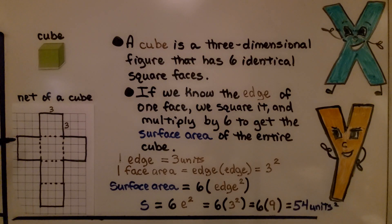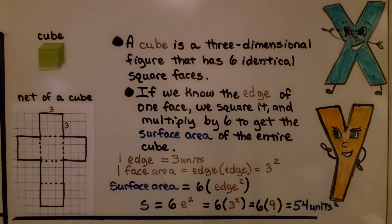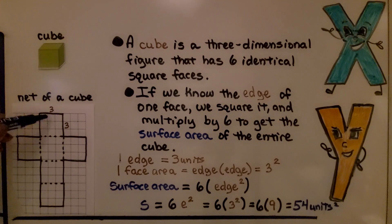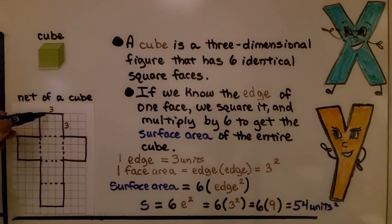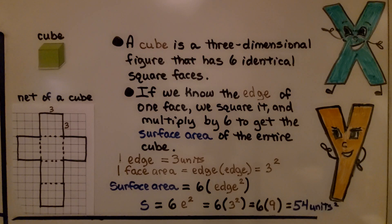Here we have a cube and its net. A cube is a three-dimensional figure that has six identical square faces — one, two, three, four, five, six identical square faces. If we know the edge of one face is 3, we square it: three times three gives us the area of one face. We multiply that by 6 for all six faces. The area of one face is 9, and nine times six gives us the surface area. So if we know the edge of one face, we square it and multiply by six to get the surface area of the entire cube.